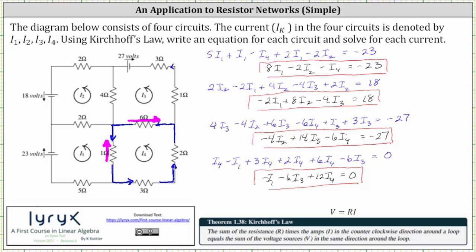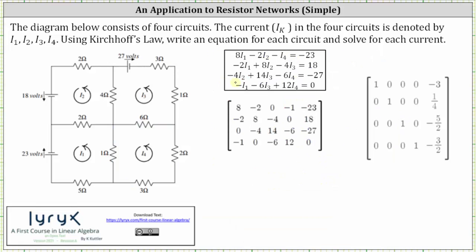To save time, the setup is already done. We have the four simplified equations, and because we have four unknowns and four equations, we have a four by five augmented matrix. Equation one — I sub three is missing — gives row one: 8, -2, 0, -1, -23. Equation two — I sub four is missing — gives: -2, 8, -4, 0, 18. Equation three — I sub one is missing — gives: 0, -4, 14, -6, -27. Equation four — I sub two is missing — gives: -1, 0, -6, 12, 0.